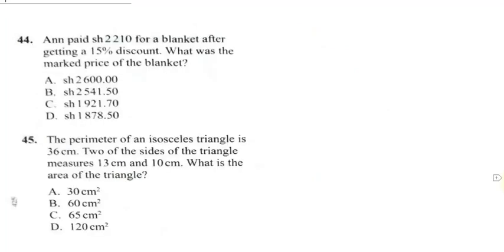Question 44 says Ann paid 2210 shillings for a blanket after getting a 15% discount. What is the marked price of the blanket? Now if you understand the concept about discount, discount is an amount you get such that if you buy a product, discount is the reduction amount you can get from whoever is selling the product.